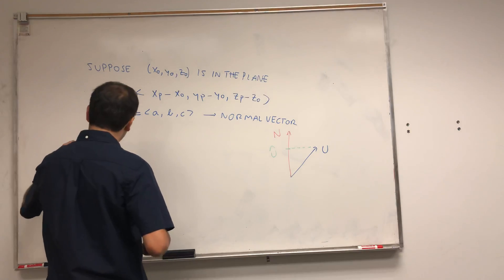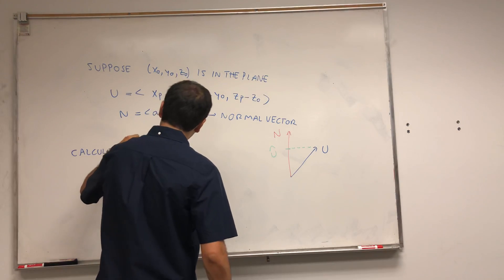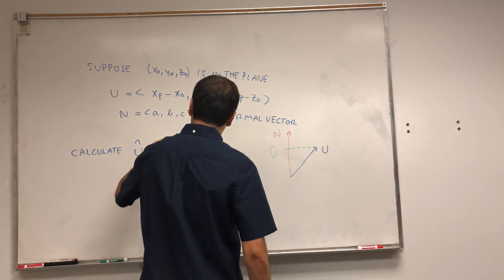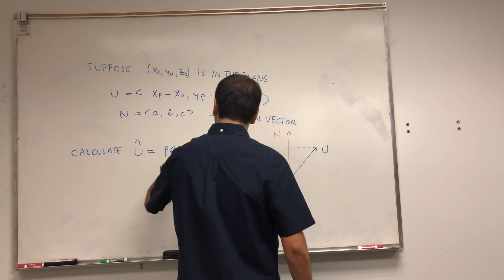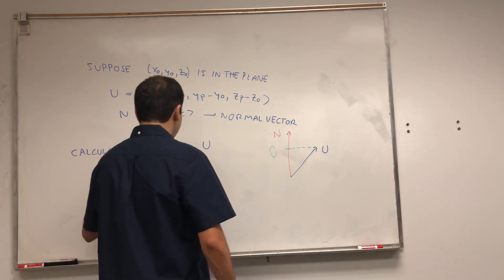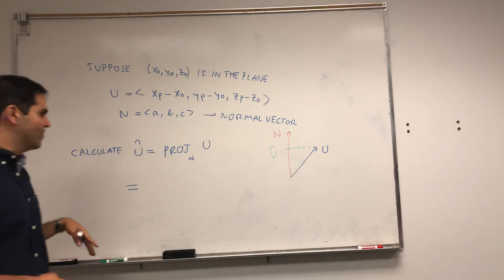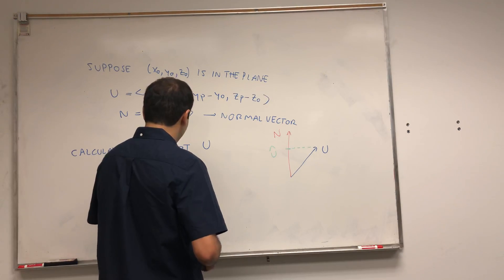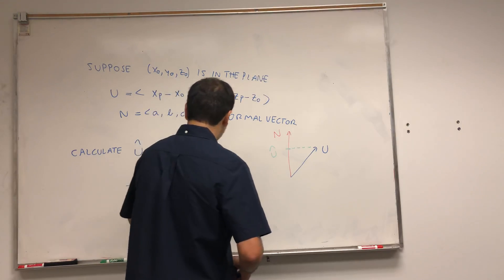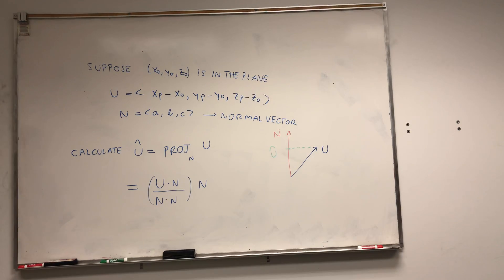The way to get it, using linear algebra, is just (U · N) / (N · N) times N. And in fact, not only that...